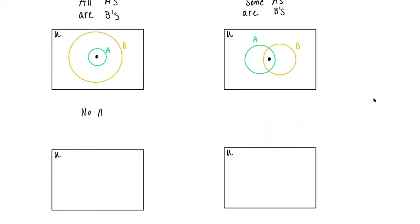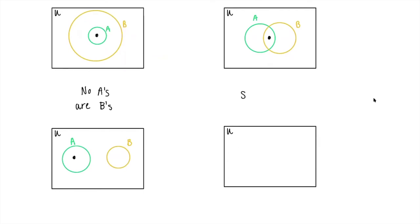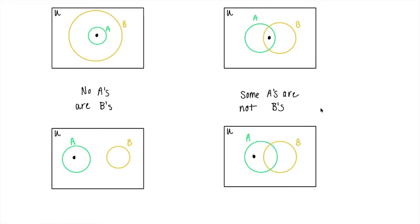If we have the phrase 'no A's are B's,' then these two circles are completely disjoint — here's A's, here's B's, there is no overlap between the two, and there's stuff inside the A's circle. The phrase 'some A's are not B's' would still indicate a bit of overlap between the two, but since some A's are not B's, that guarantees there's something sitting outside the B's circle, inside A only.